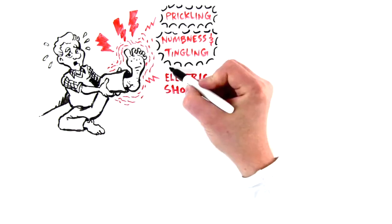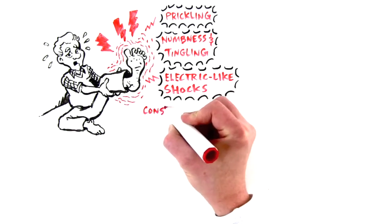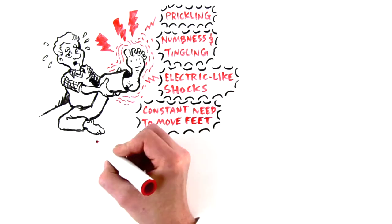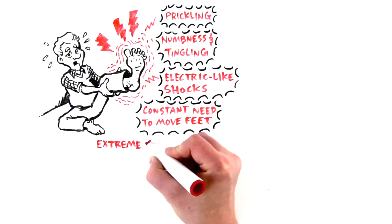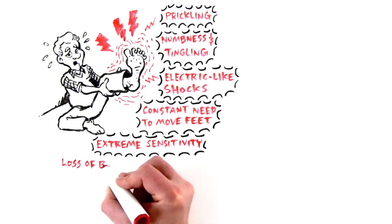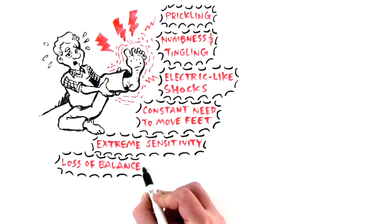Some people say they feel extreme sensitivity to touch or temperature. Peripheral neuropathy can cause you to lose your balance or fall. Others have developed small sores that don't heal or grow worse over time. Peripheral neuropathy can even land you in the hospital if left untreated. And we don't want that.